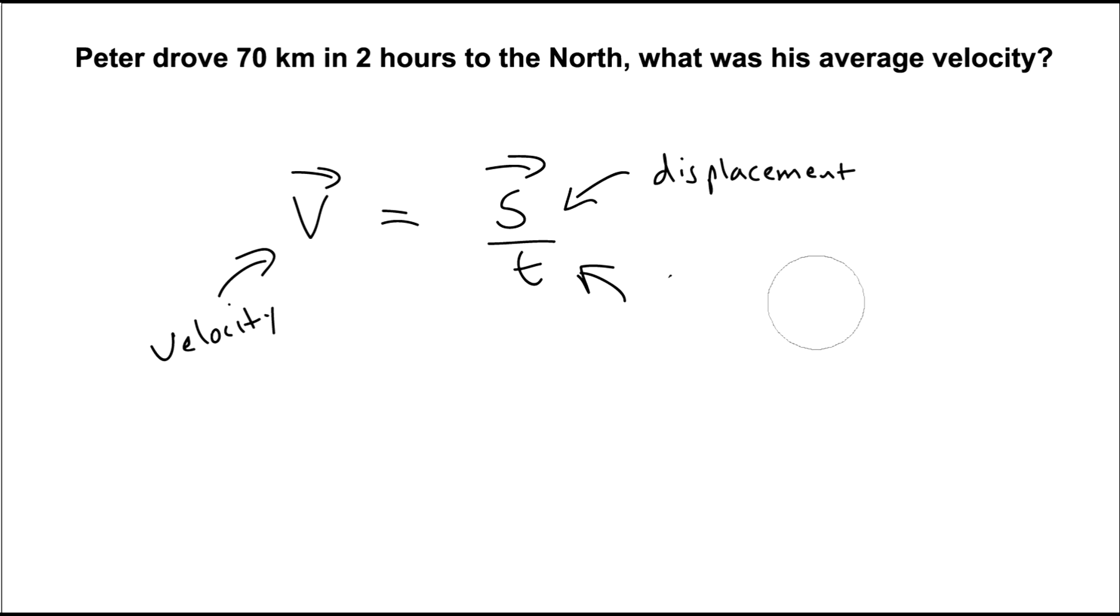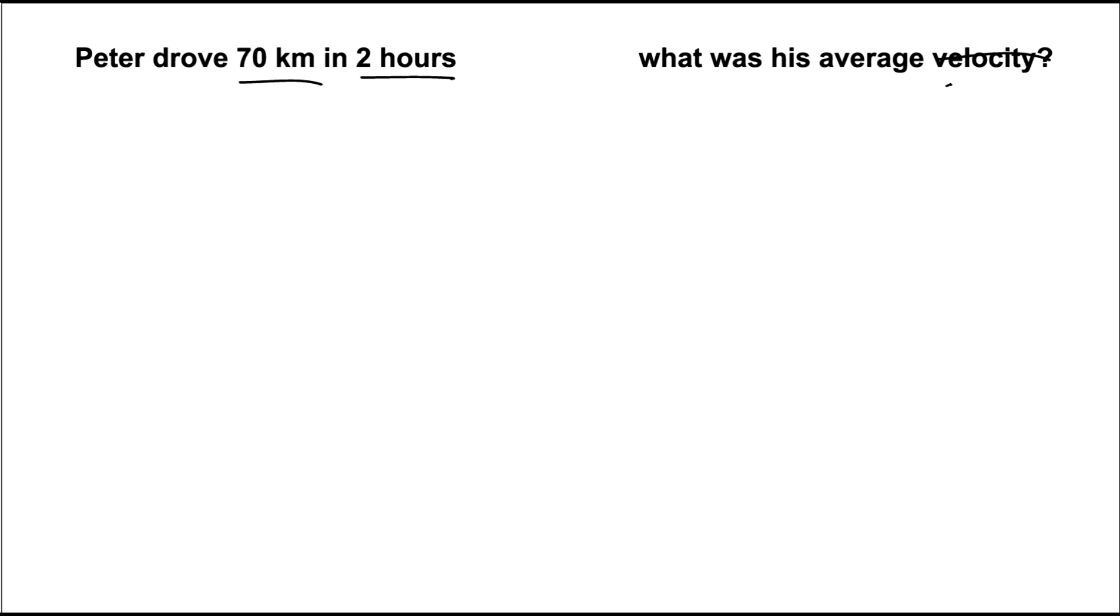Now the definition of speed could be found easily enough here. Let's remove to the north, so we take out the direction. So all we've got left here now are scalar quantities, 70 kilometers a distance and two hours time. And of course you wouldn't have velocity anymore, you'd have speed. So the definition of speed would be, you've got your distance here, and that's over time.